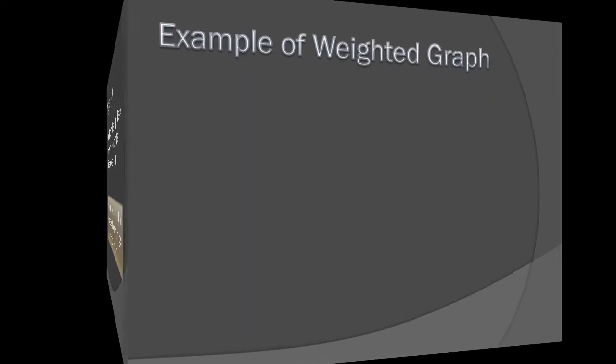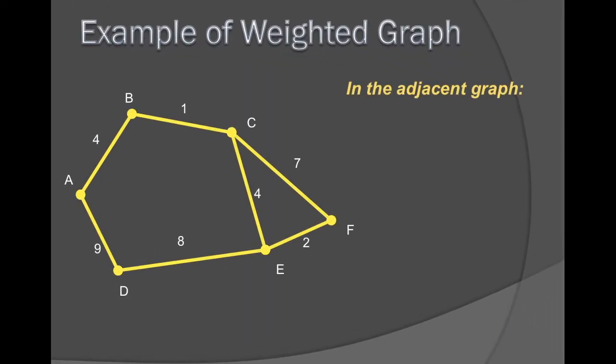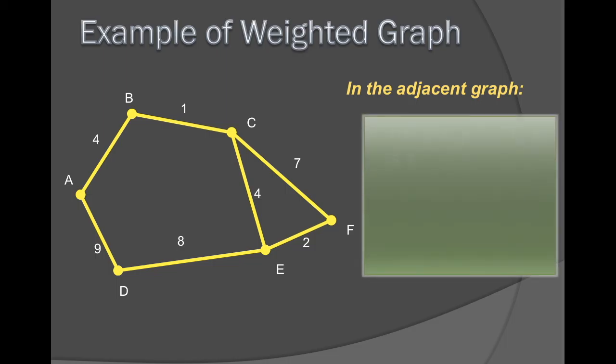Let's see an example. In the adjacent graph here, you'll notice that regardless whether there's arrows or not, each of these edges have a weight or a unit given to them.